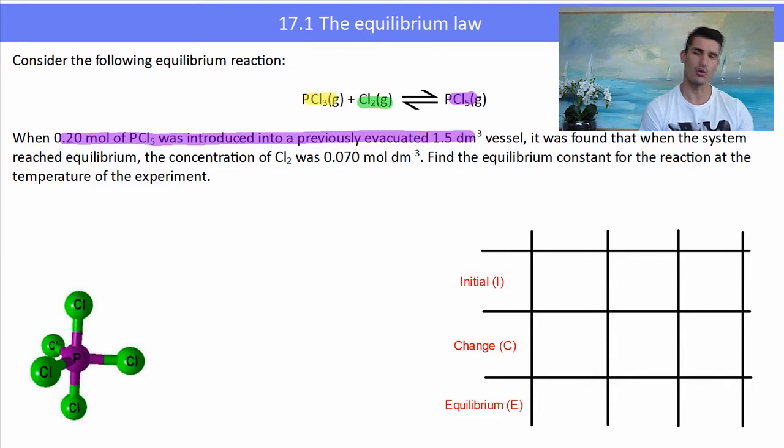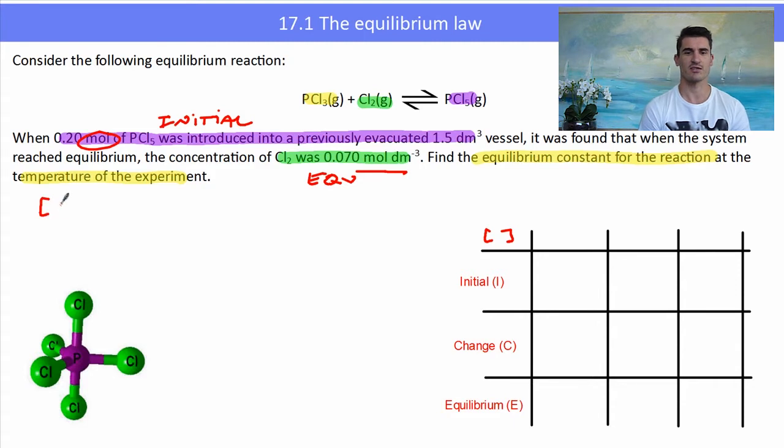Again we've got the problem: we've got the mole of one and the concentration of the other, so we have a units mismatch and a before-and-after situation. Initially we had some PCl₅, then they give us information about Cl₂, and we've got to work out the equilibrium concentrations of every species in the mixture to work out the K value. For my ICE table, I'll be using a concentration table and I need to work out the concentration of PCl₅: mole over volume. They told us 0.2 moles and the volume was 1.5, so we can calculate the concentration.